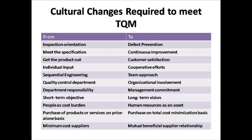What are the cultural changes required to meet TQM? These changes represent a shift from traditional to modern business. Initially it was inspection-oriented; now it should be defect-prevention-oriented. Initially it was about meeting specifications; now it is based on continuous improvement. Initially the goal was just to get the product out and make profit; now it has turned to customer satisfaction. Before it was individual input; now it is the cooperative effort of everyone in the company. Initially it was sequential engineering; now it's a team approach. Traditionally a quality control department existed; now it is an organization-wide involvement in the total quality management process.